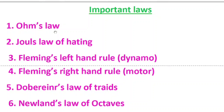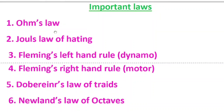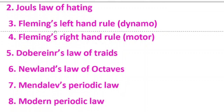The next important topic is important laws. I have given important laws because if you learn them, they may ask for a definition, differences, or the function of a dynamo or motor. You should concentrate on: Ohm's law, Joule's heating law, Fleming's left hand rule (dynamo), Fleming's right hand rule (motor), and Dobereiner's law of triads. Learn the limitations and uses of Dobereiner's law. They may also ask the limits of Mendeleev's periodic law, Newland's law of octaves, or Dobereiner's law of triads.